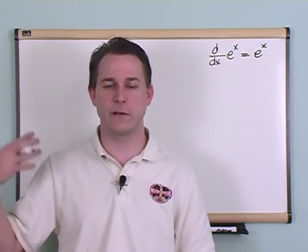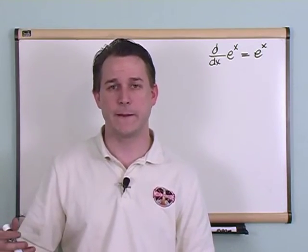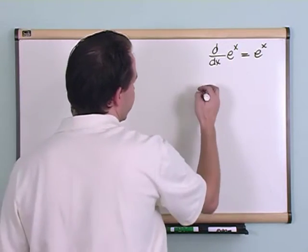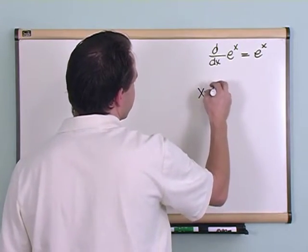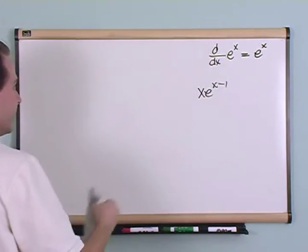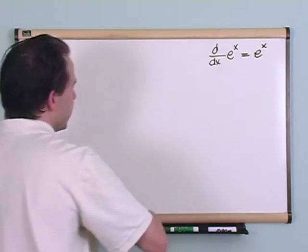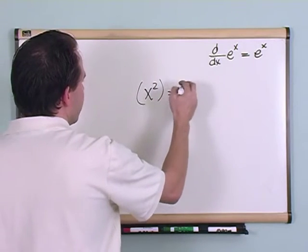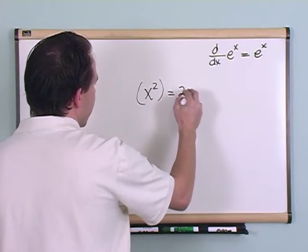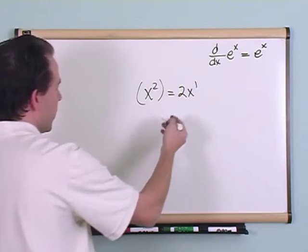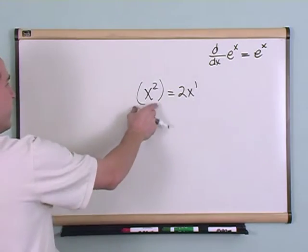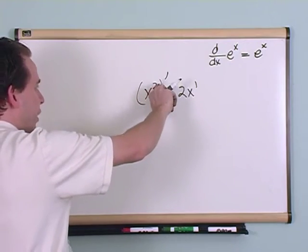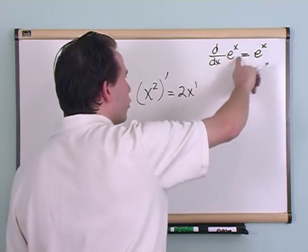You can take derivatives of exponentials all day long and you can't get rid of it. Don't fall into the trap of trying to say this is x times e to the x minus 1. That's not going to work and that's not true. The formula for the derivative of like x squared, you take the exponent out and then you have x and you put 2 minus 1 would be 1. Well that would be the answer.